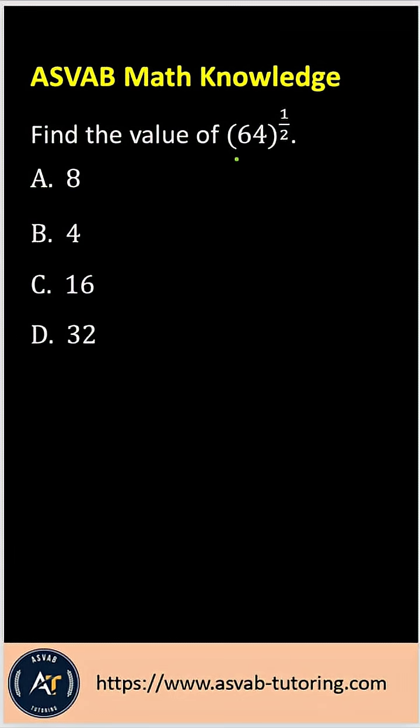So this question is very simple and you see this type of question very often in the actual ASVAB test. There are two ways you could do that. First of all, you see here exponent of 1 half, so that is basically square root over 64, exactly the same thing. So that gives you 64 square root over 64, you know that the answer is 8.